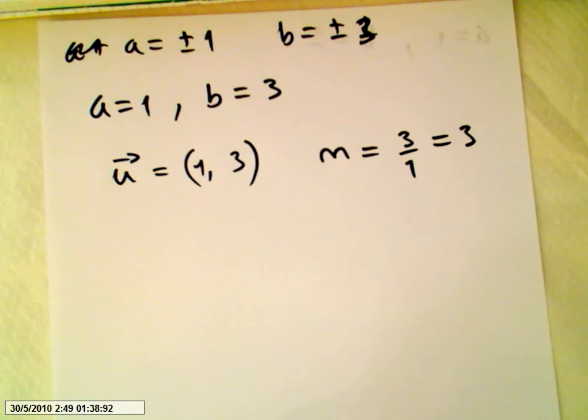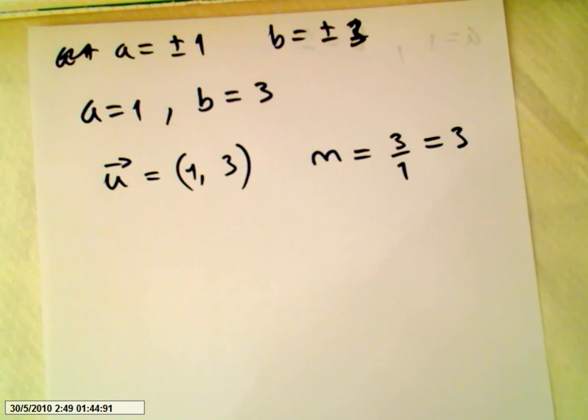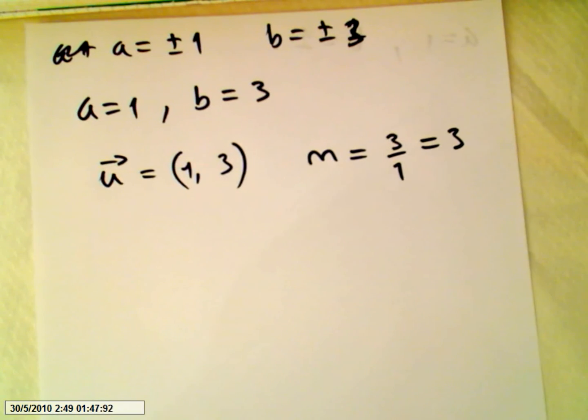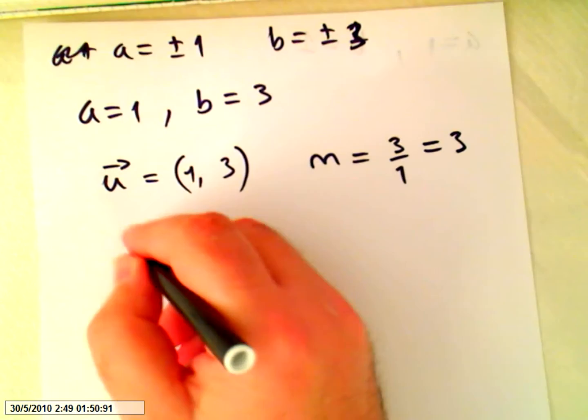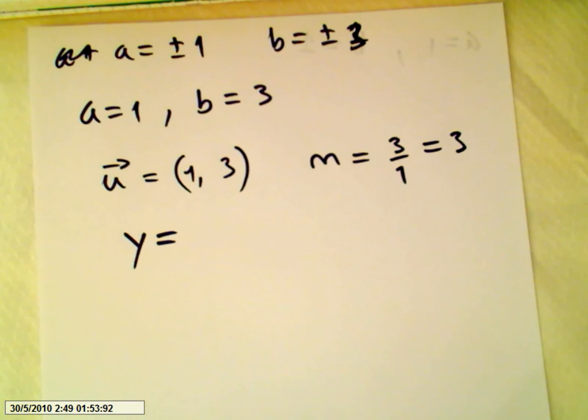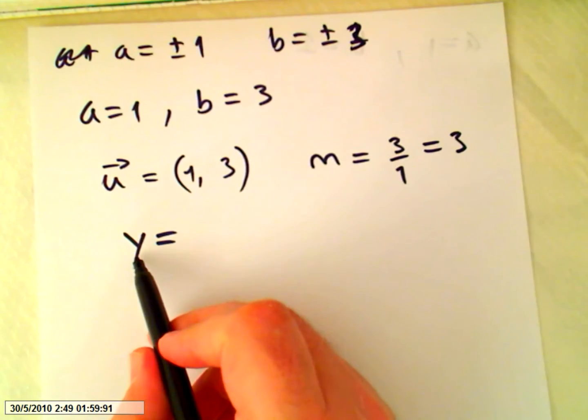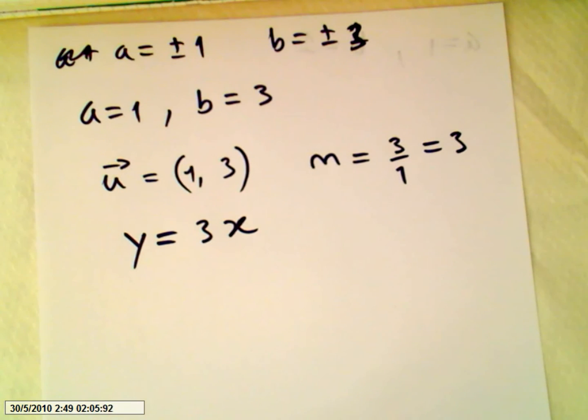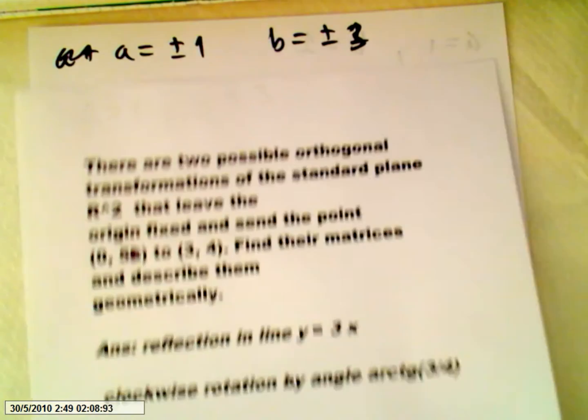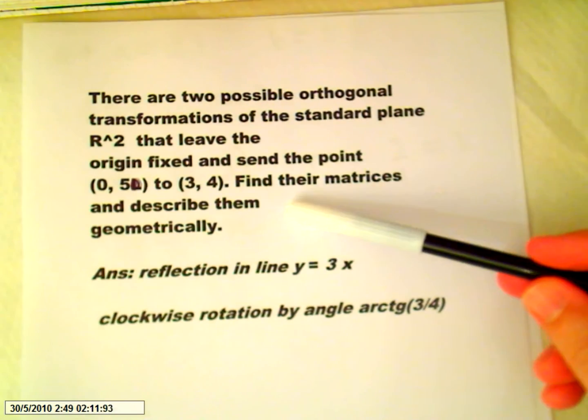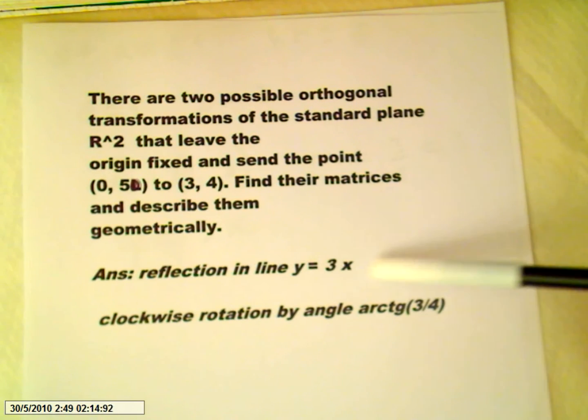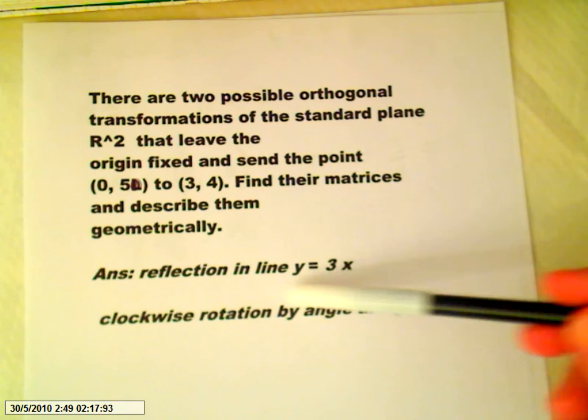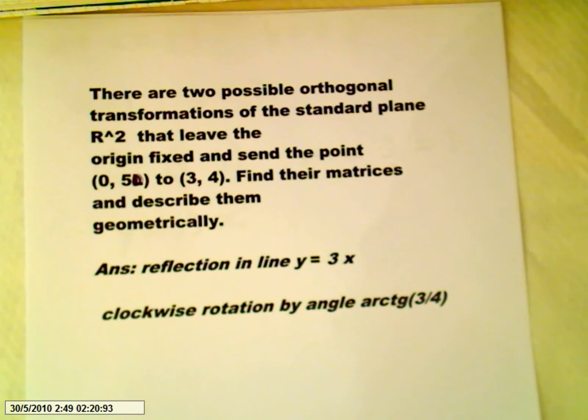So the points are reflecting around the origin, reflecting about the line y equals 3x. The question was find their matrices and describe them geometrically. Geometrically, this is a line and we just found the equation, the general equation of this line.